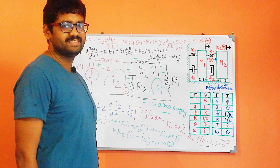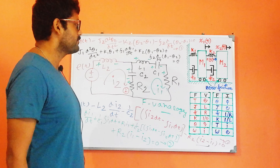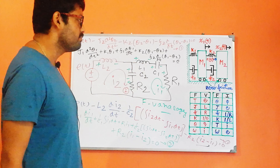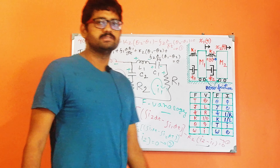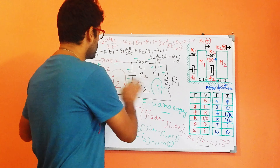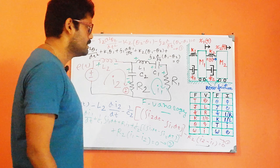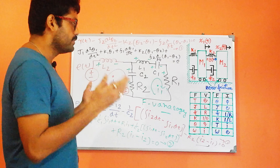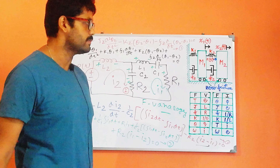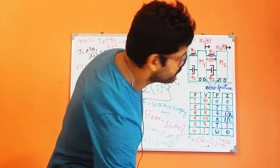Hi, we are Engineering Brothers and once again we have come out with another problem. We have just completed our FV analogy for our fifth problem and I have just shown you this is our circuit diagram. But I am going to initiate another class which is our FI analogy.